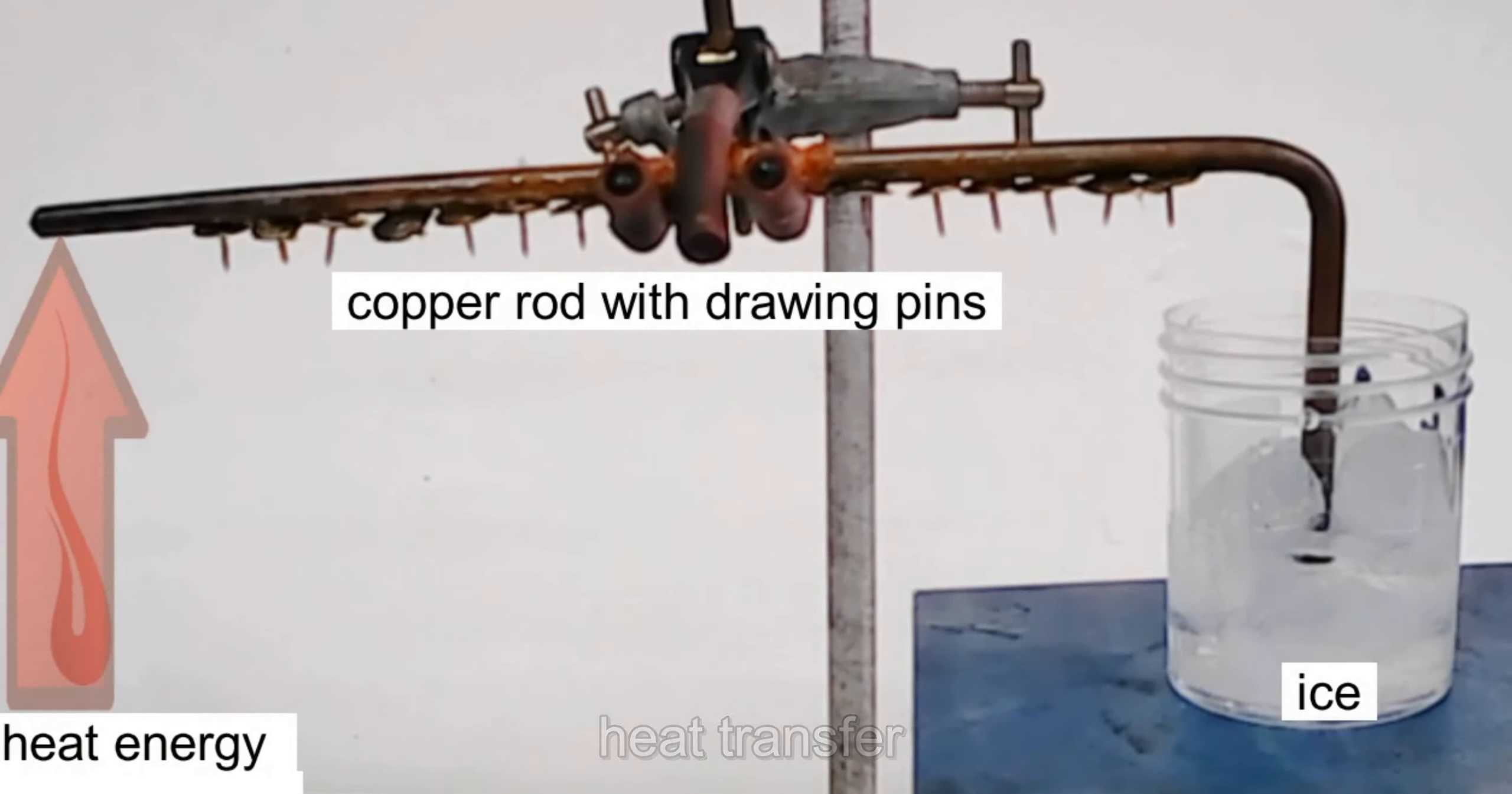We've got a copper rod with drawing pins. We're going to heat it up on the left-hand side, and it's nice and cool on the right-hand side. So let's see what happens as it is heated up. You can see straight away that the pins are starting to drop off on the left-hand side. I'm going to spin this video on a little bit.